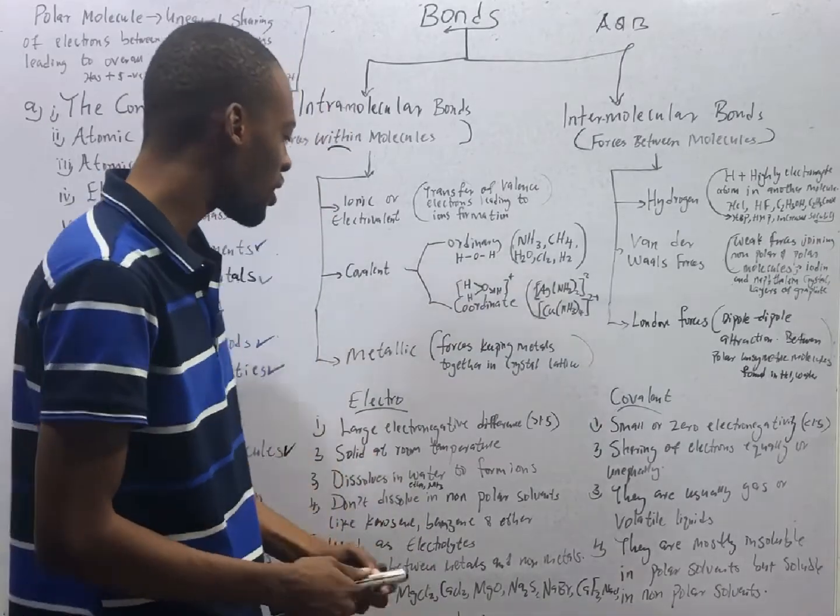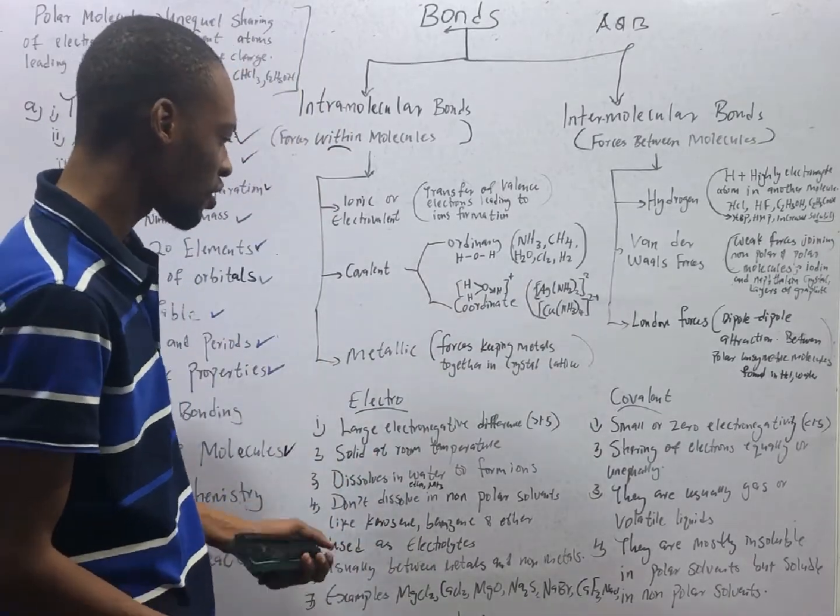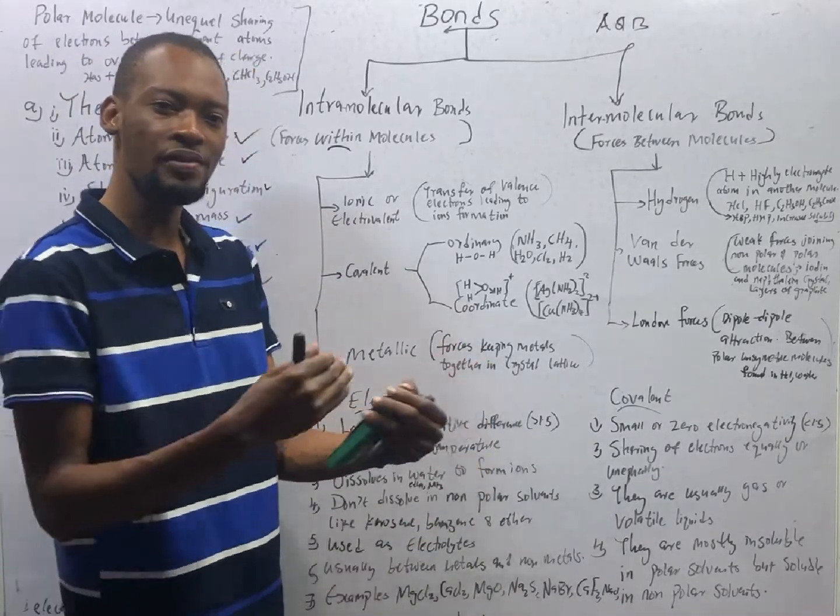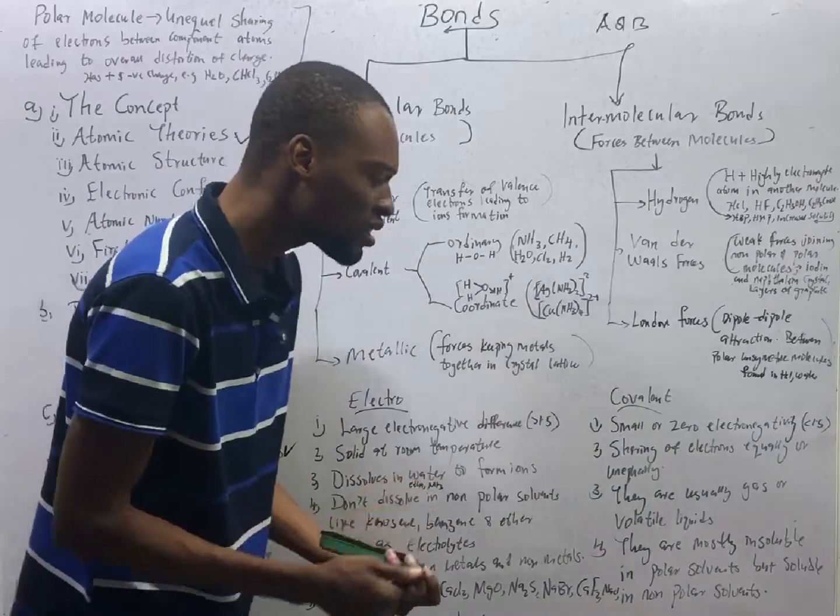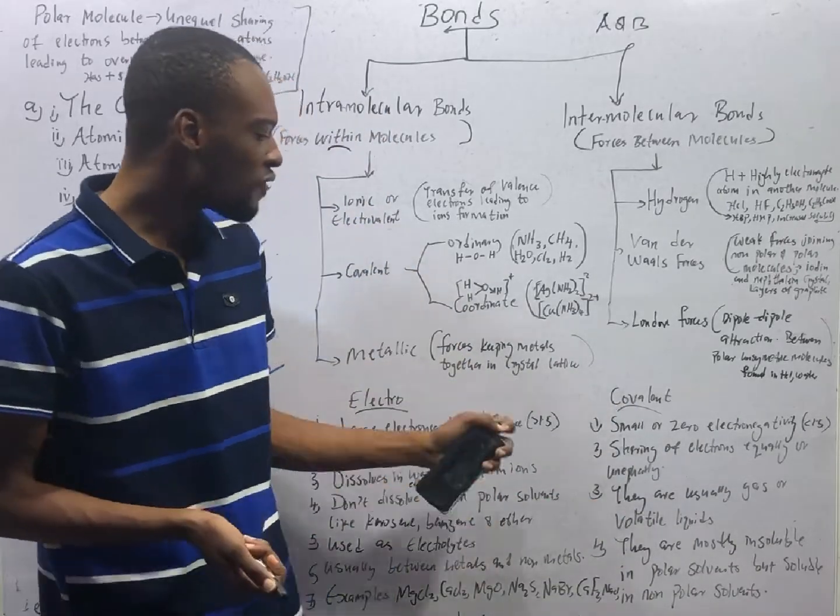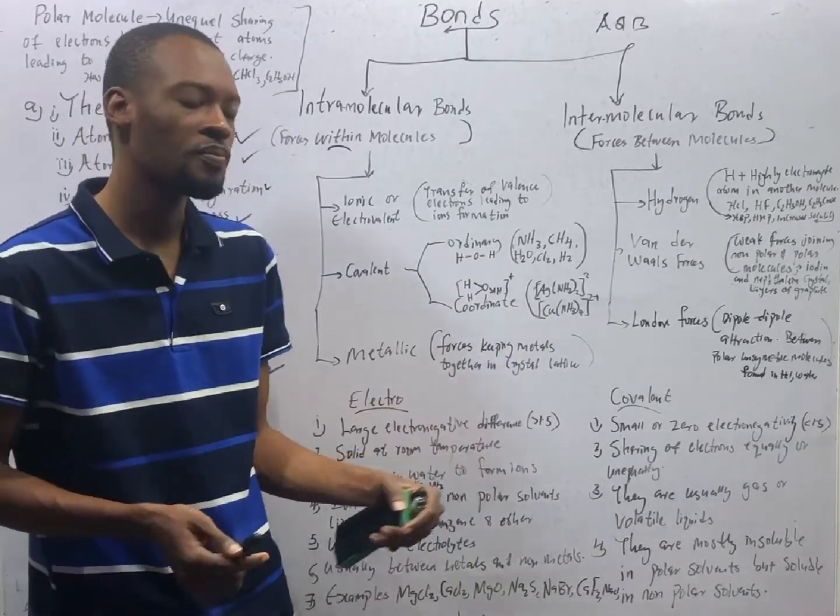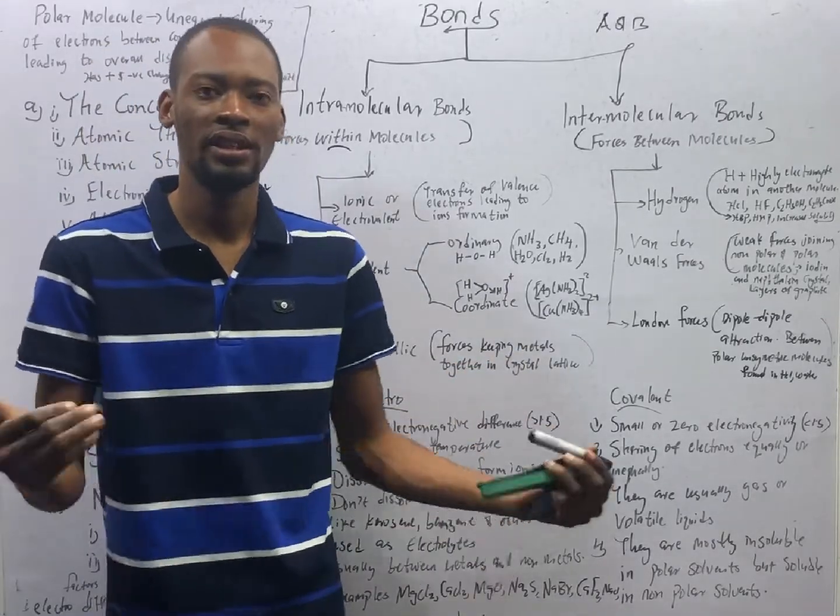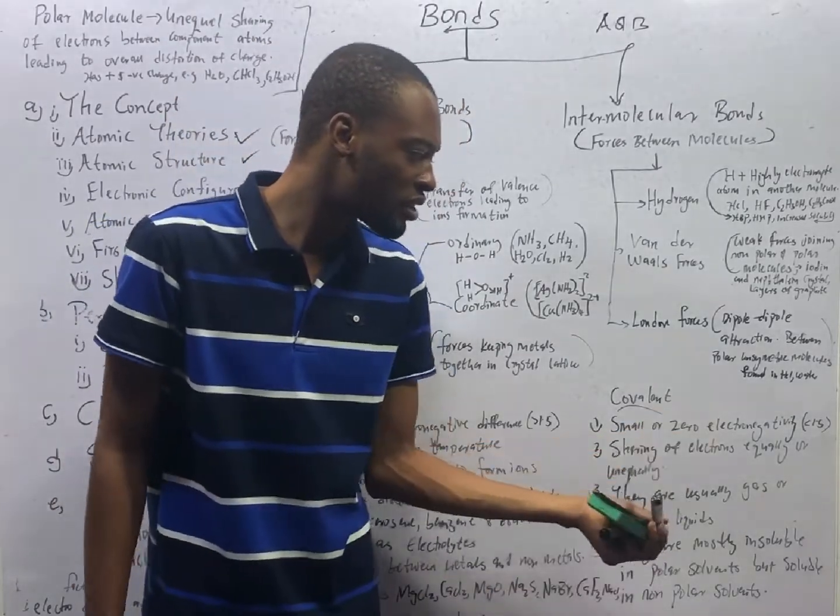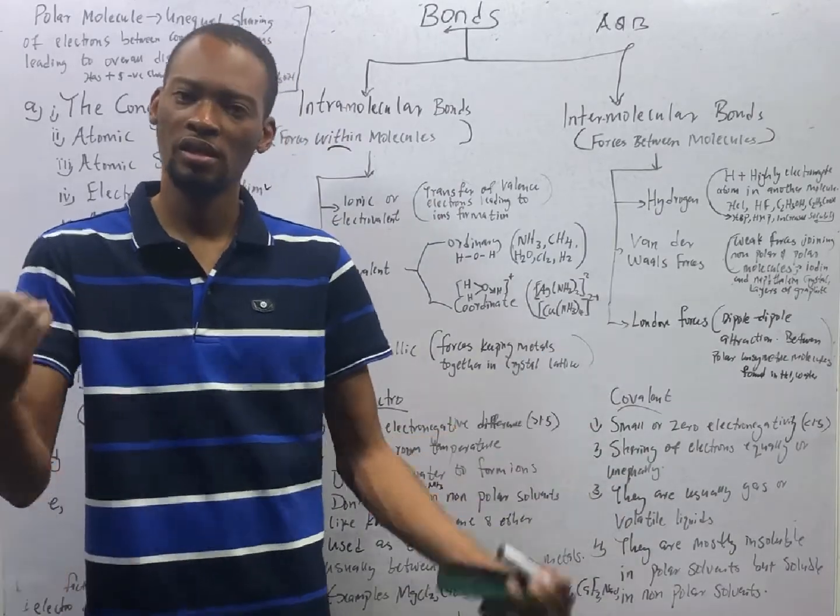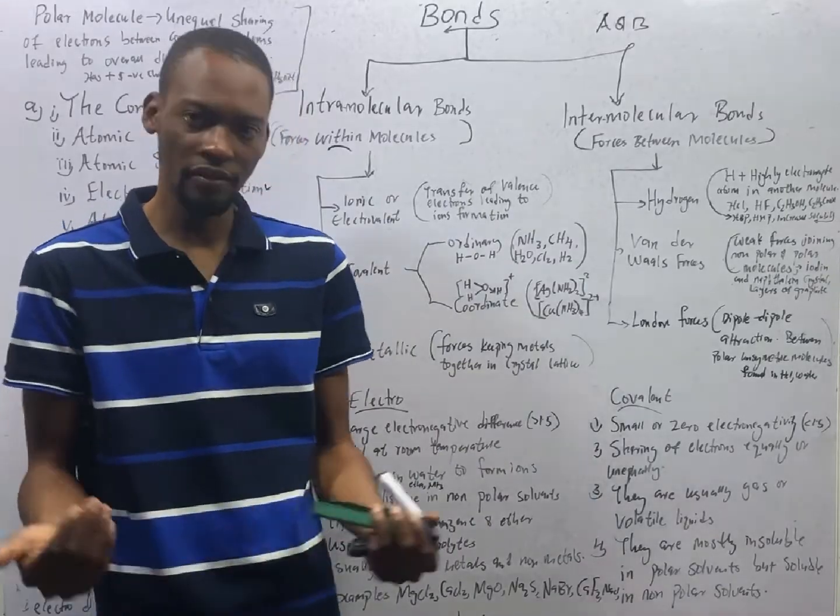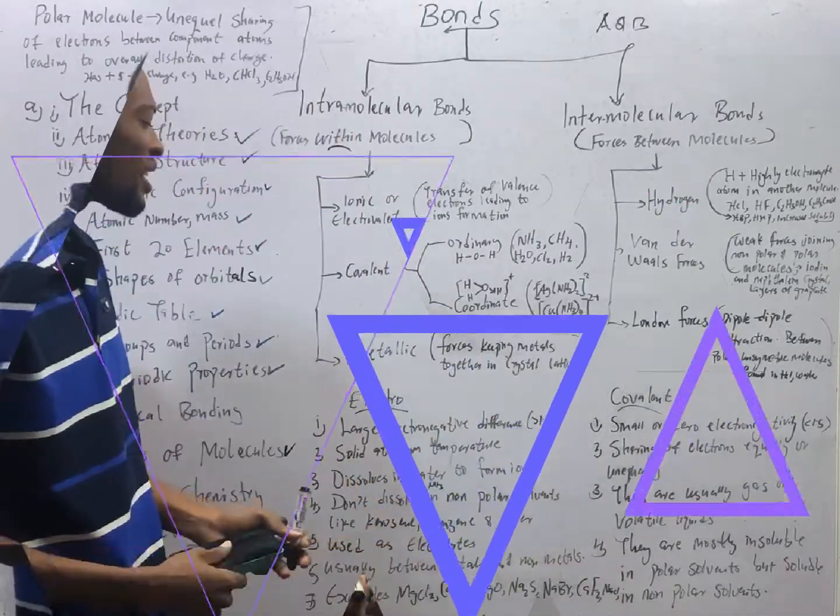Valence electrons are the electrons in the outermost shell. Let's look at one or two things about electrovalent bonds. They are between atoms or molecules with large electronegativity difference. Electronegativity is the ability of an atom to attract electrons to itself. So if electronegativity difference is greater than 1.5 between the atoms, then ionic bonding can take place. Similarly, for covalent bonding, they are for atoms with lower or zero electronegativity difference, less than 1.5 or even zero.